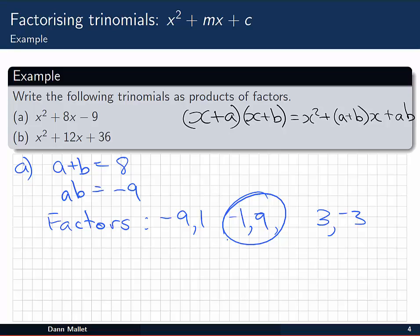Now in these kinds of trinomials where the coefficient of x² is 1, it doesn't matter which we pick to be which. So we can simply write down x² + 8x - 9 is equal to x + a, in this case a is -1, and x + b, where b is in this case 9. So we get (x - 1)(x + 9). And of course you can check that again by expanding out the brackets, and you should get x² + 9x - x to give 8x, and finally -9.